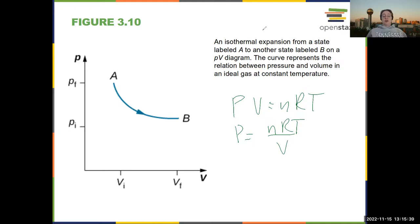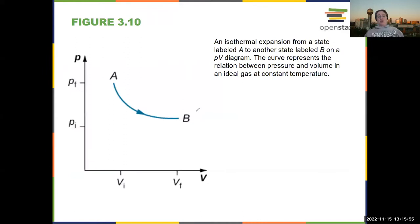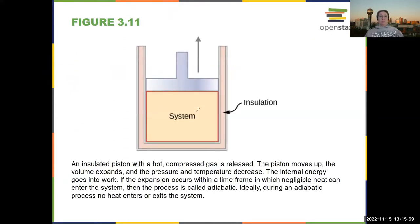So for example, if you very suddenly yanked all of those masses off, it might not happen slow enough. There might be a temperature change before the system reached equilibrium again, and then you wouldn't be able to draw the exact PV diagram.